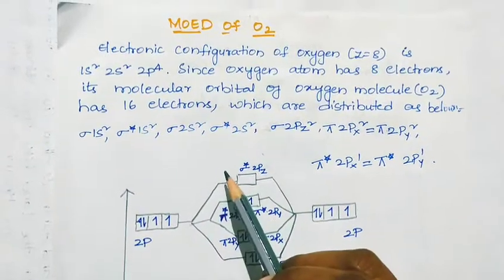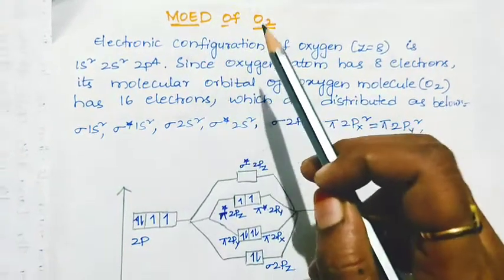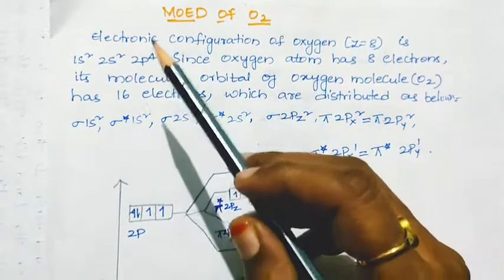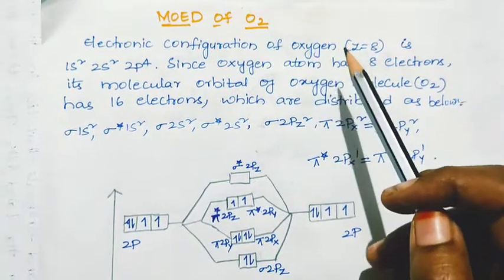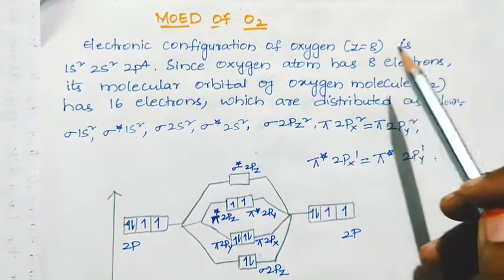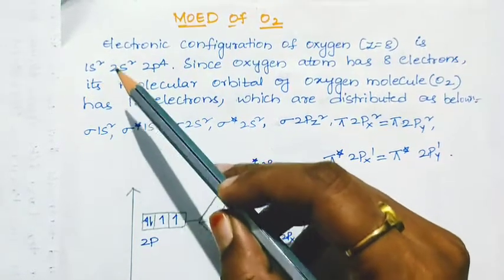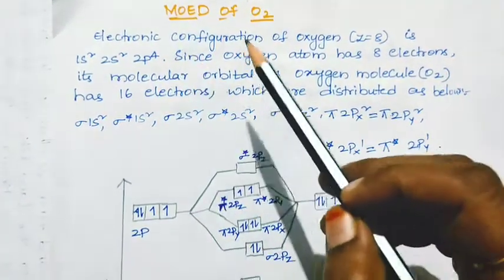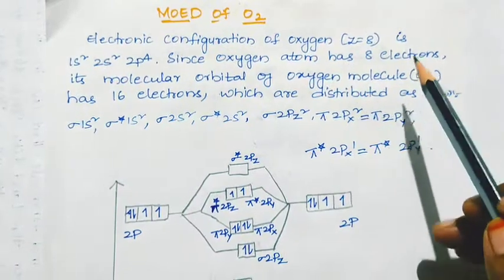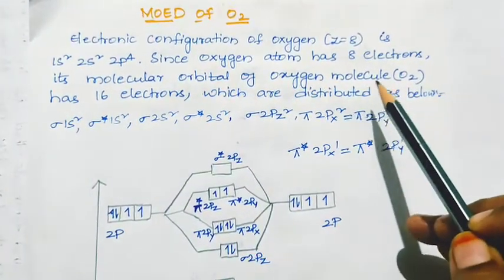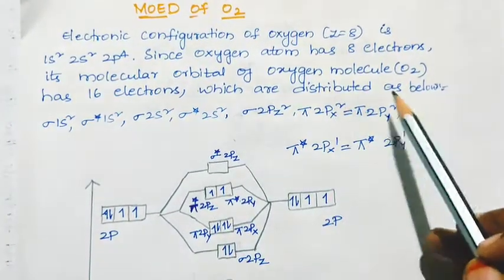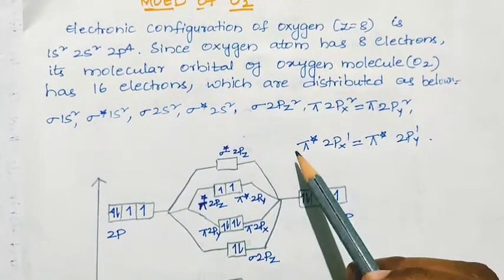Next we will explain the molecular orbital energy diagram of oxygen molecule. The electronic configuration of oxygen: atomic number is 8, configuration is 1s2, 2s2, 2p4. Since oxygen atom has 8 electrons, its molecular orbital O2 has 16 electrons which are distributed as below.